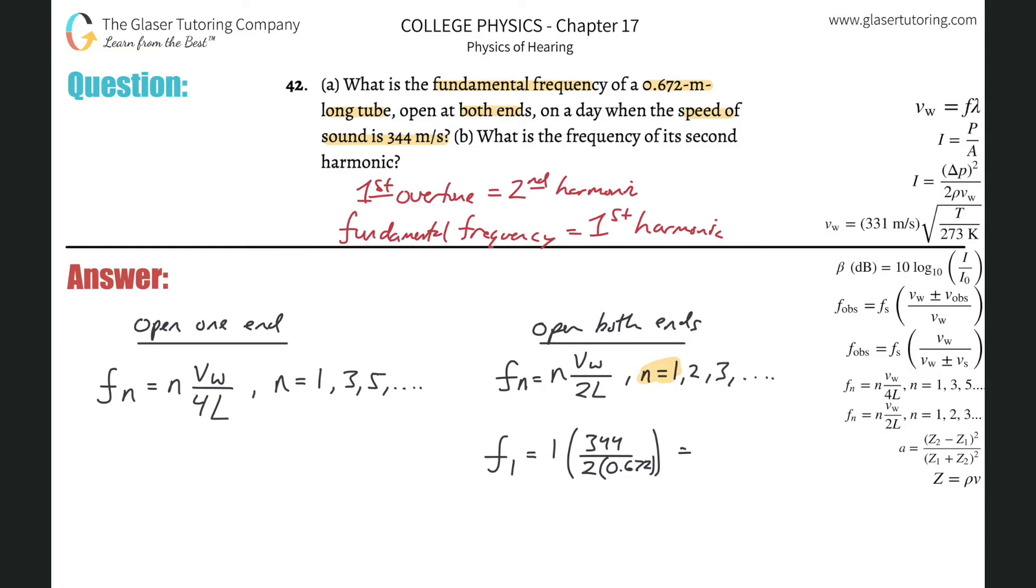So this is 344 divided by parentheses two times 0.672. And we have about 256 Hertz, or per second or cycles per second. There you go. That's letter A.